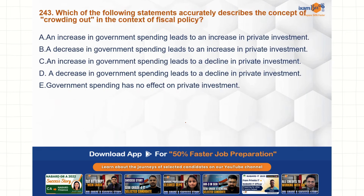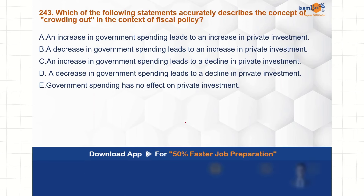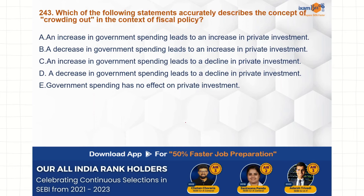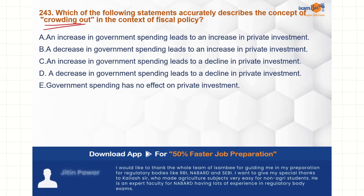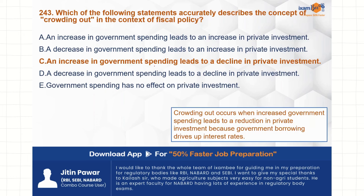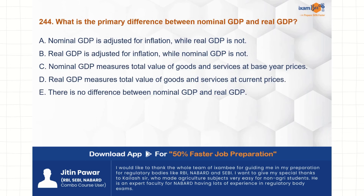Which of the following statements accurately describes the concept of crowding out in the context of fiscal policy? Is concept ka matlab hota hai ki agar government spending increase ho jae, that eventually leads to a decline in private investment. C is the correct choice here: an increase in government spending leads to a decline in private investment.